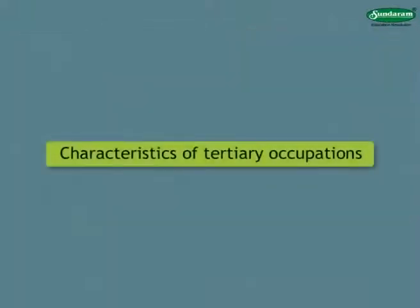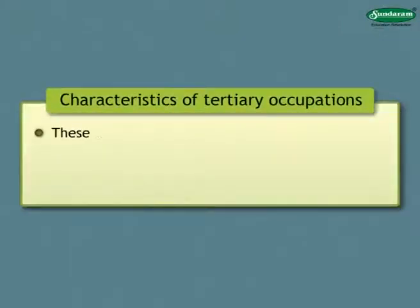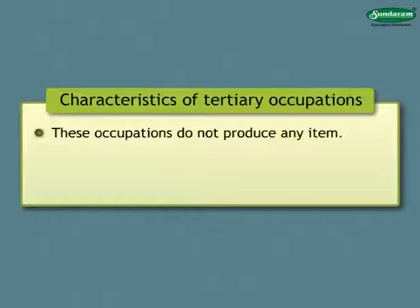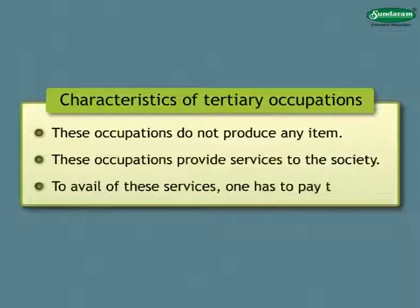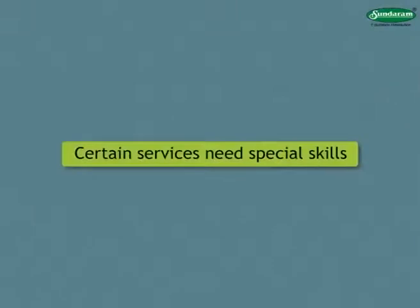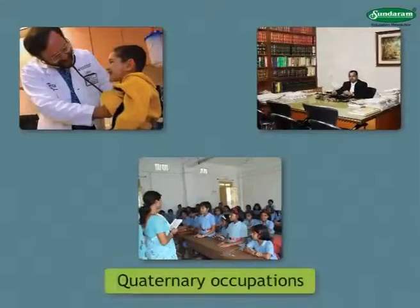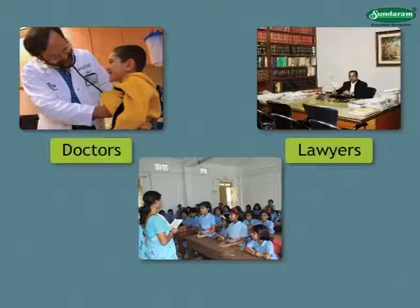The following are the characteristics of tertiary occupations. These occupations do not produce any item. These occupations provide services to the society. To avail of these services, one has to pay the cost. Apart from these, certain services need special skills. Such services are included in quaternary occupations. For example, doctors, lawyers, teachers, etc.